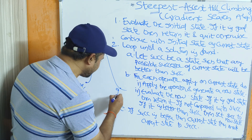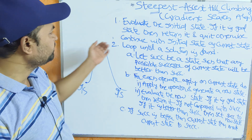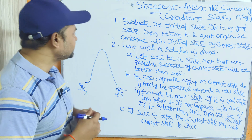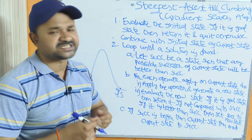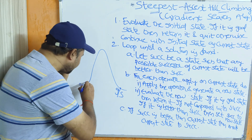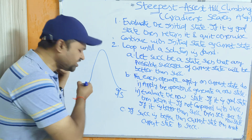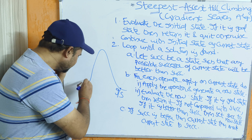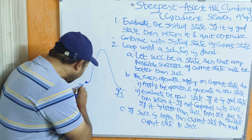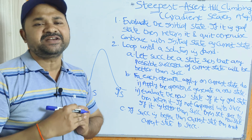Step one: evaluate the initial state. If it is a goal state, then return it and quit; otherwise, continue with the initial state as the current state. Here, this initial state is not the goal state, so we make this initial state the current state and continue.